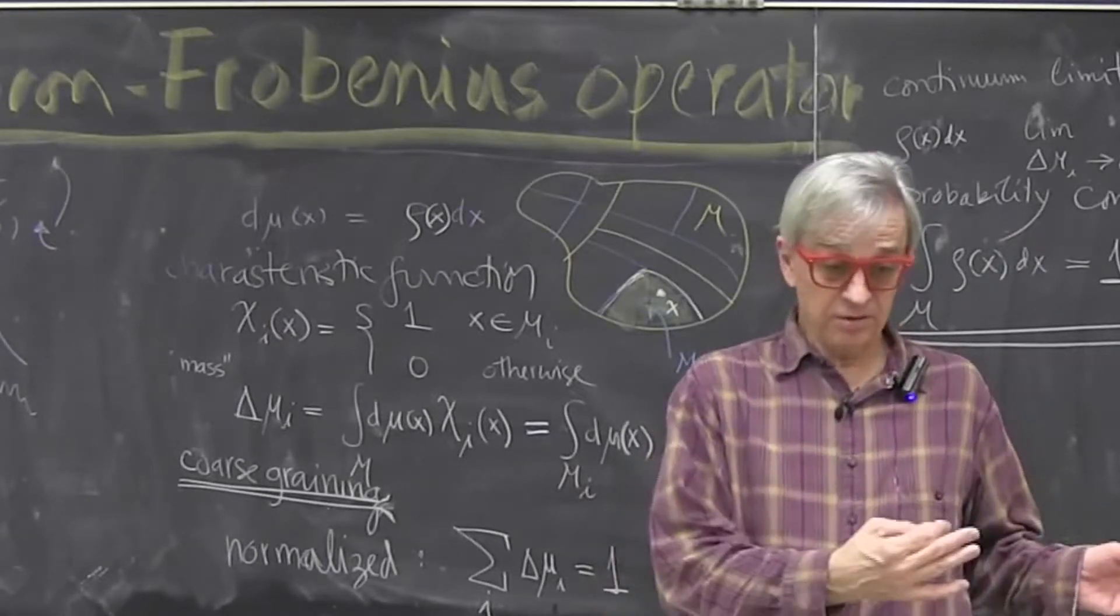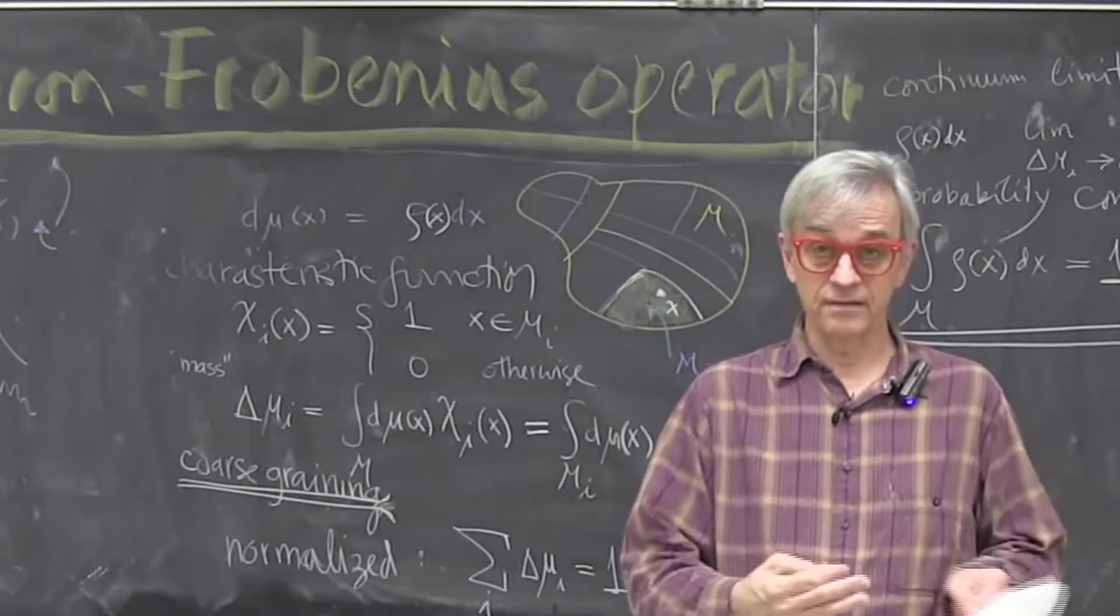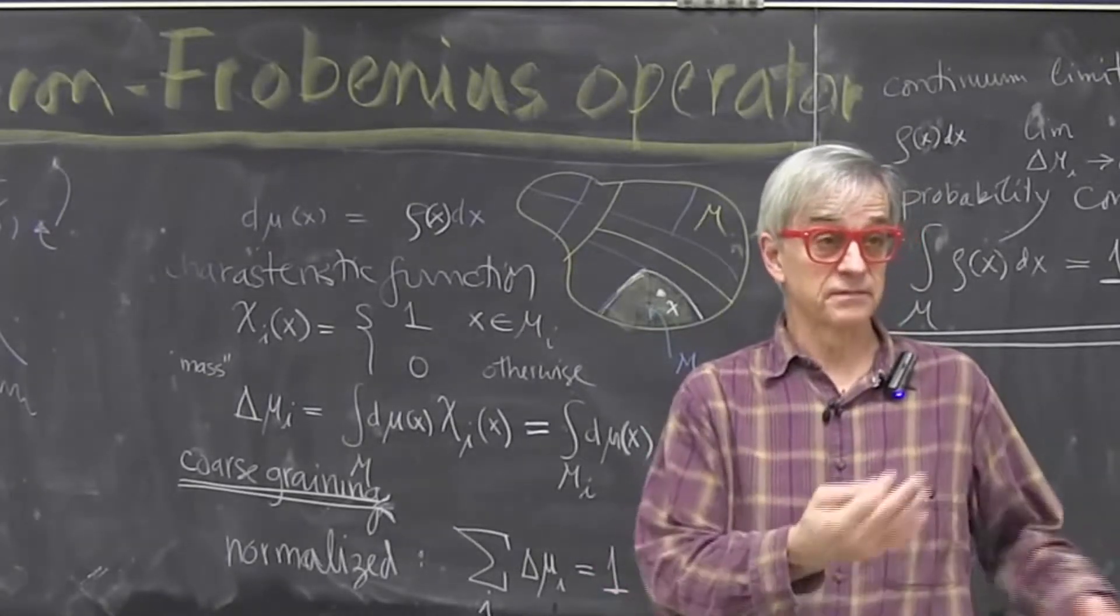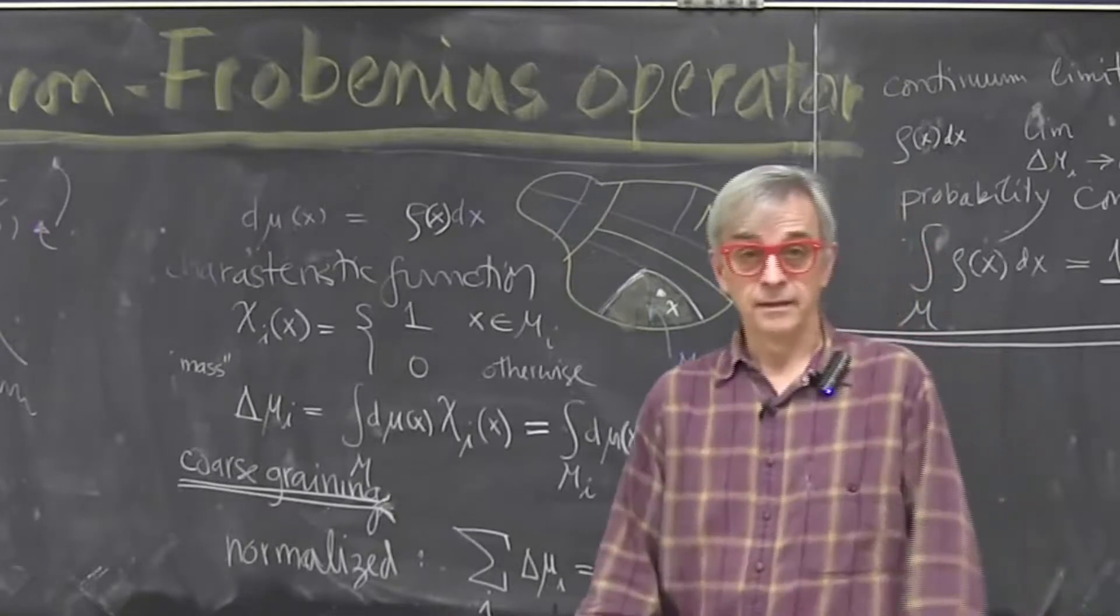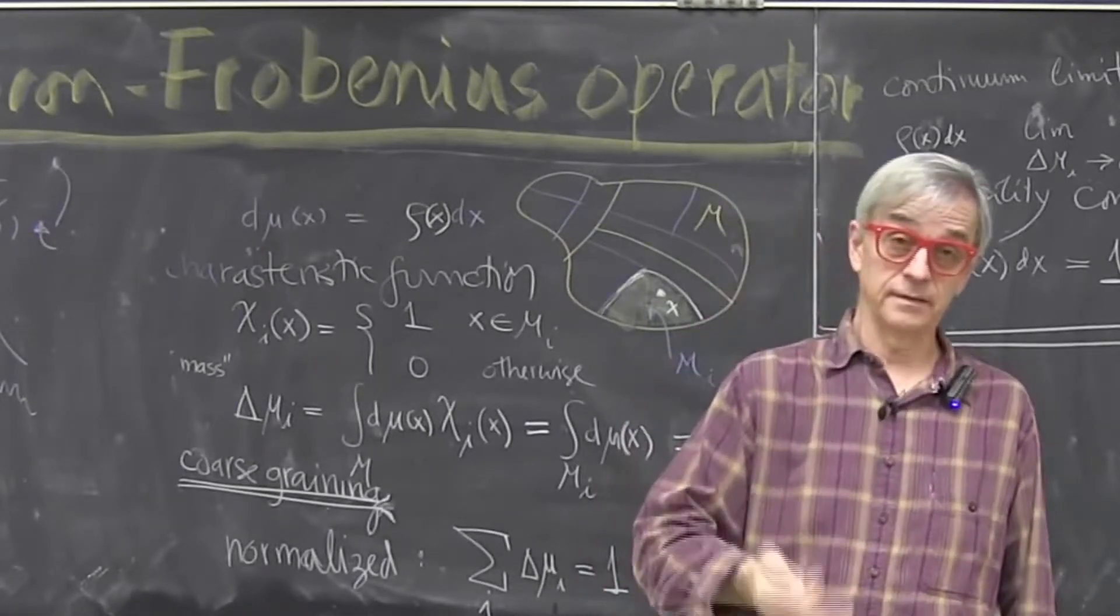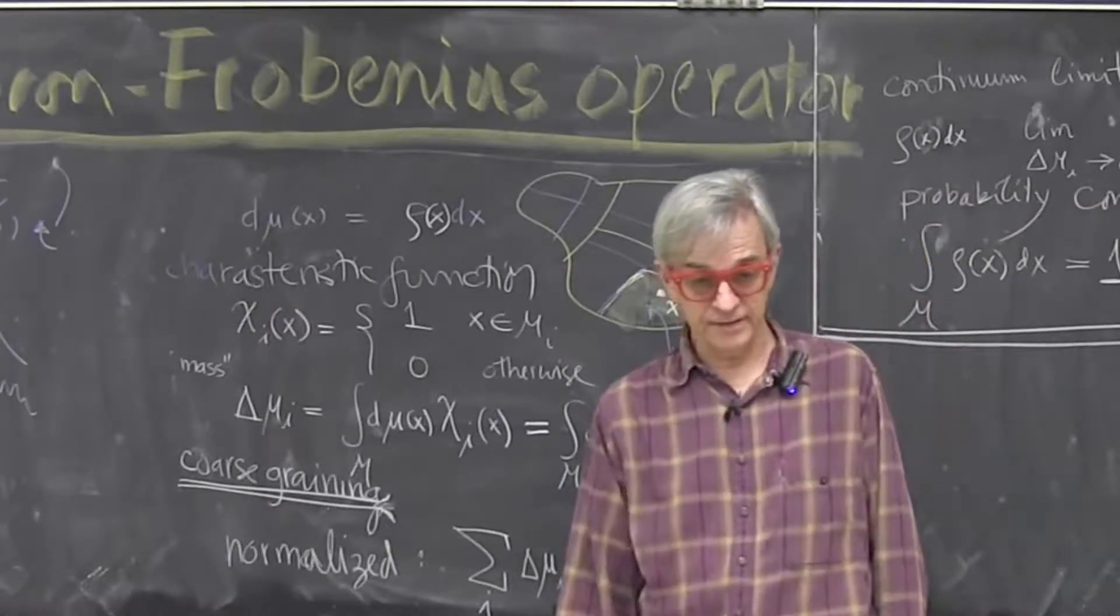But when they teach you quantum mechanics, everything is linear. Unitary operators, linear. So how is that? You know, why is it? Is it more fundamental, quantum mechanics? And nonlinear physics just comes out of it?